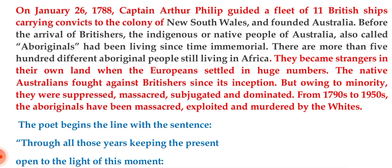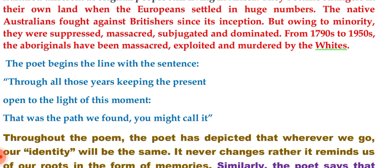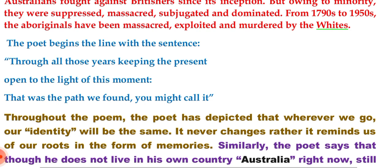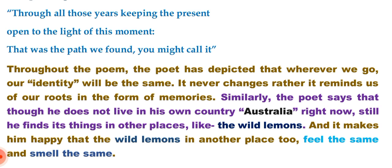Now let's go to the poem. The poem begins with the line: 'Through all those years, keeping the present open to the light of the moment — that was the path we found.' Throughout the poem, the poet has depicted that wherever we go, our identity remains the same and never changes according to geographical place. Rather, it reminds us of our roots in the form of memories or nostalgia. Similarly, though the poet does not live in Australia right now, the wild lemons in another place feel the same, smell the same, and taste the same — his motherland still reminds him in many ways.